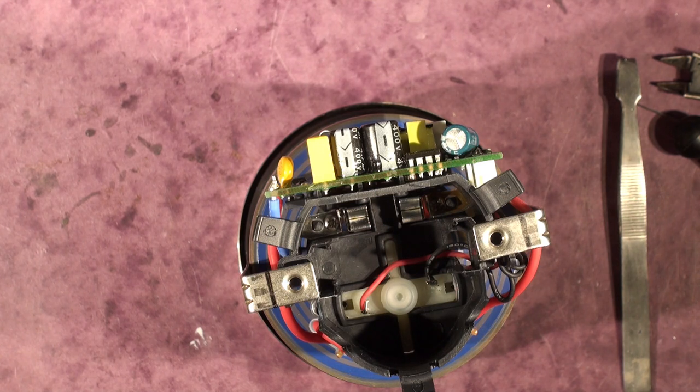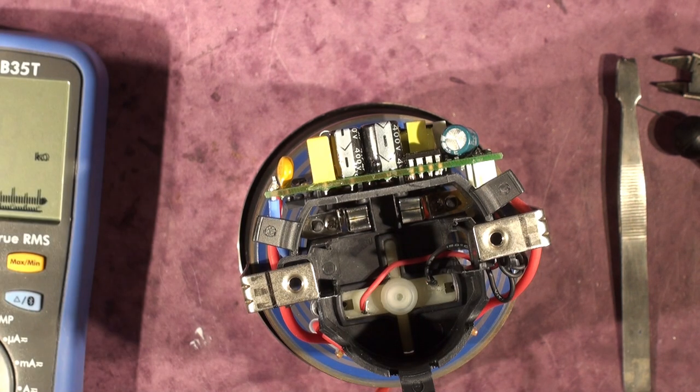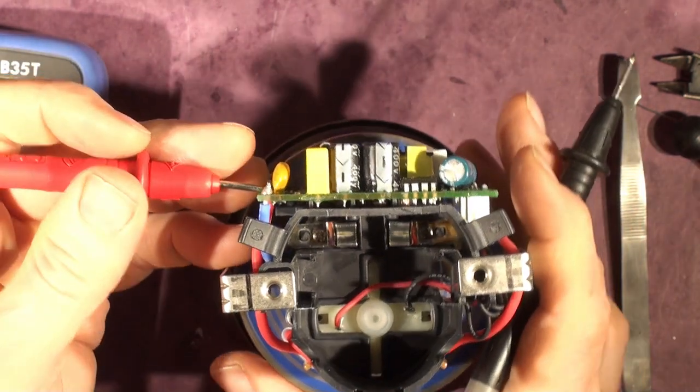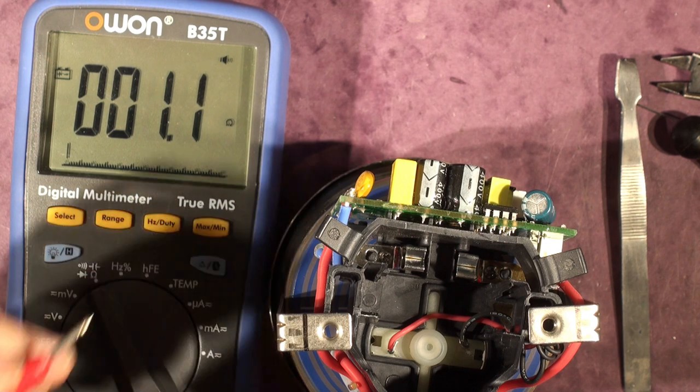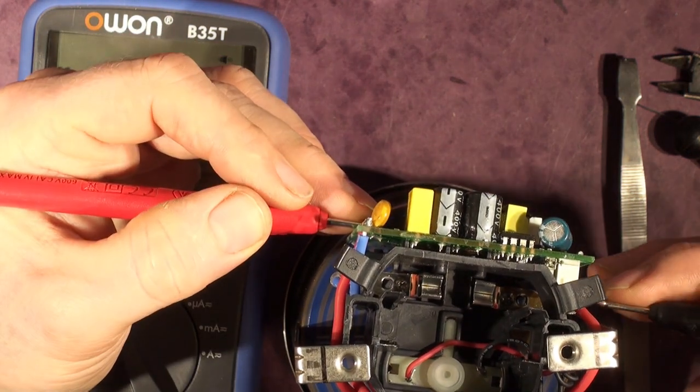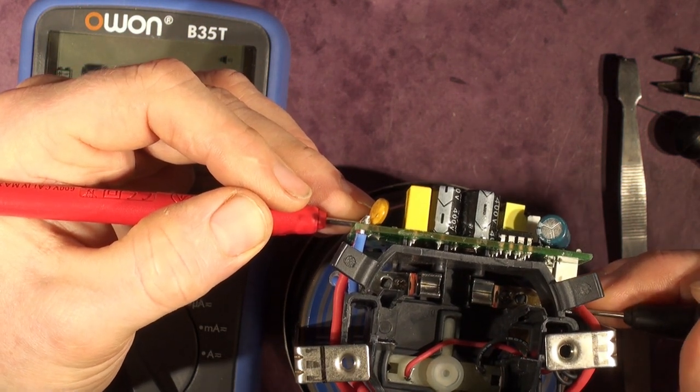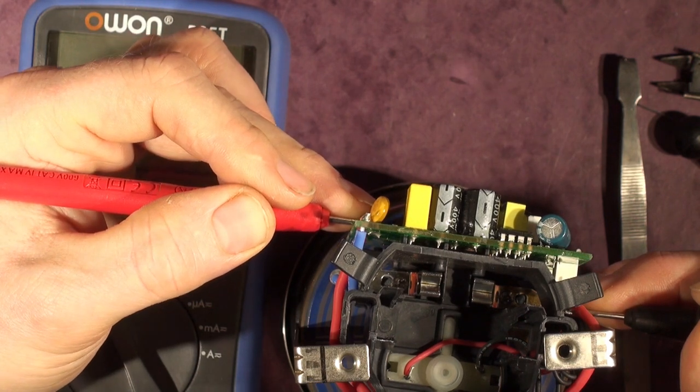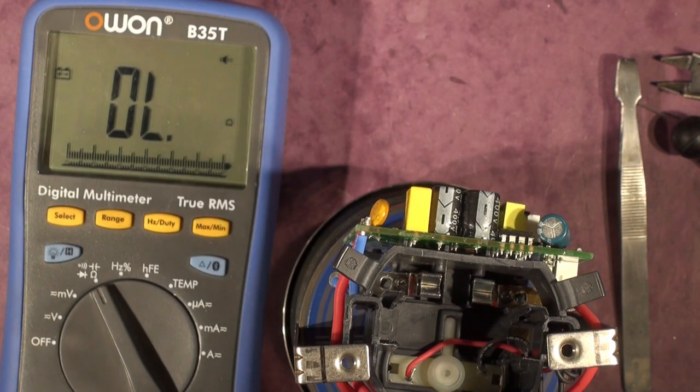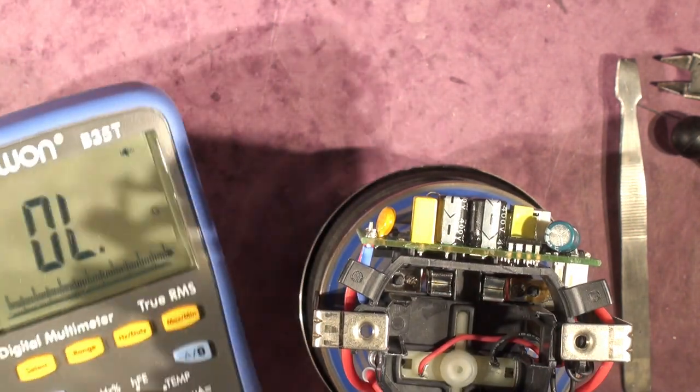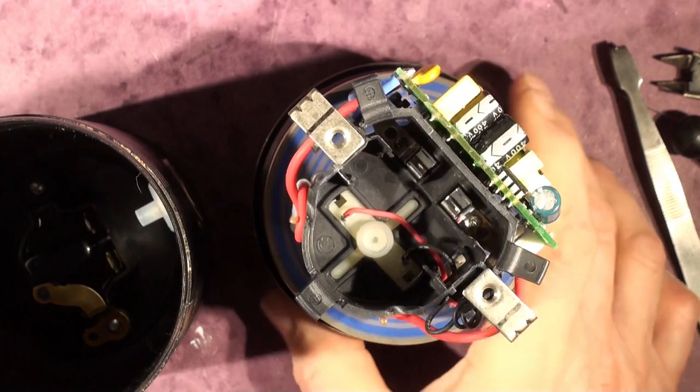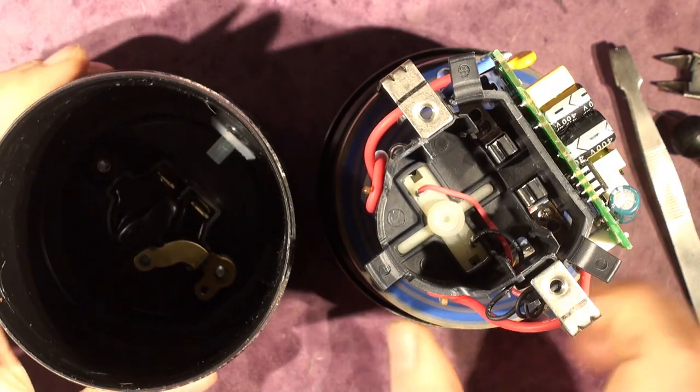So putting the meter on, let's just check that we have contact between those two. Contact, I bet we have, but I might have damaged something in the meantime. Anyway, so let's see if we've got contact. Yeah we have. Right, so let's put it back in there, back in our box and then try it out shall we.